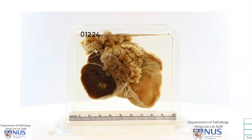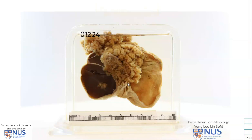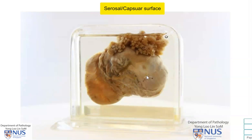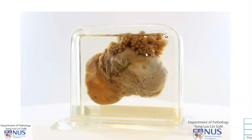This is a pathology specimen showing the cut surface of a multilocular ovarian cystic tumour. We know that there are multiple locules because each locule is one compartment within the cystic tumour, and we can see here that there are about four locules on the cut surface. Looking at the serosal or capsular surface of the ovary, this is also abnormal because there is evidence of a papillary tumour here.